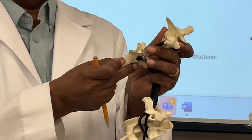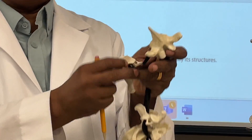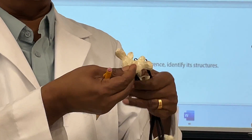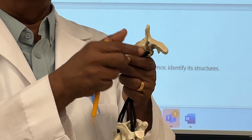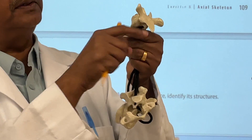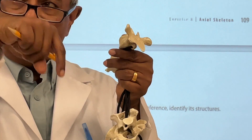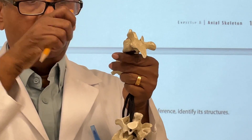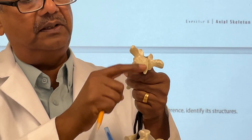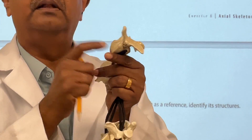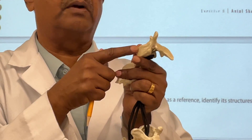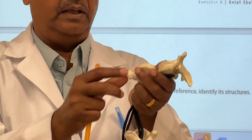The thoracic vertebrae has a bigger body than the cervical, and the spinous process is going down. So when you see the spinous process going down like this, this is definitely the thoracic vertebrae.